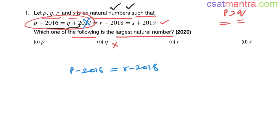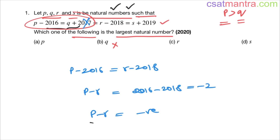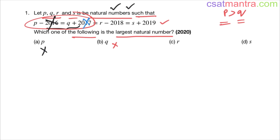p minus r equals 2016 minus 2018, which is minus 2. Essentially p minus r is negative, which means p is less than r. So our answer cannot be p — p is eliminated. From these two equations, r is greater than p.